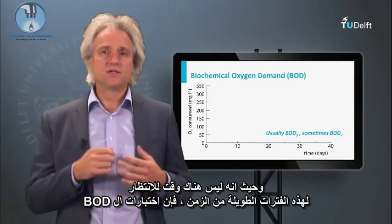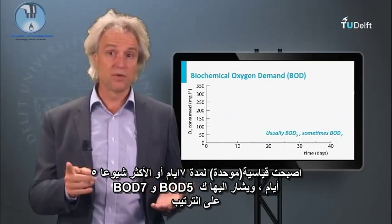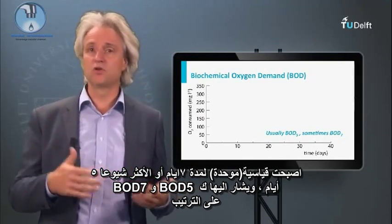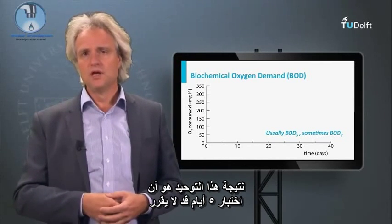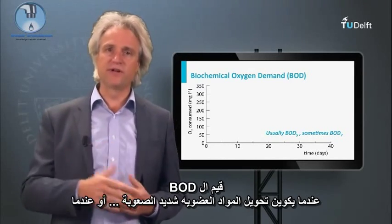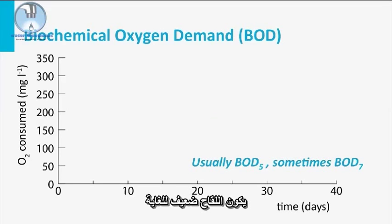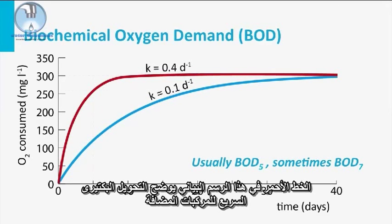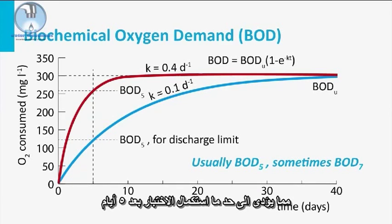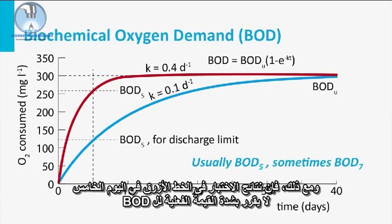Since in general there is no time to wait for such long periods of time, the BOD test is standardized to a duration of seven, and most commonly to five days, indicated as BOD-7 or BOD-5, respectively. The result of this standardization is that a five-day test may underestimate the actual BOD values when the conversion of the organic compound is more difficult or when the inoculum is very poor. The red line in this graph shows a rapid bacterial conversion of the added compound, resulting in more or less completion of the test after five days. The BOD-5 is here a good estimate of the actual BOD value. However, the test results of the blue line at day five severely underestimates the actual BOD value.